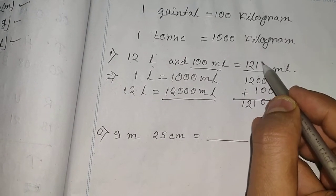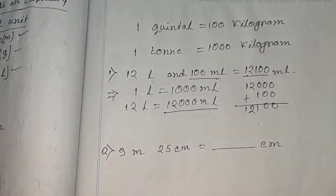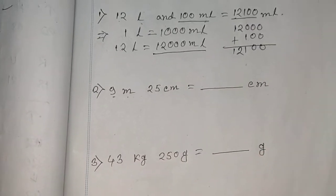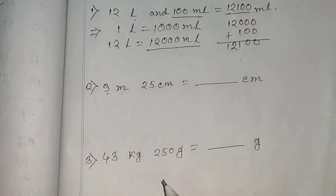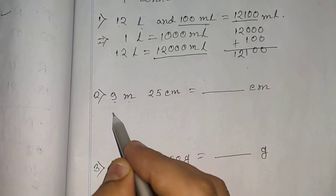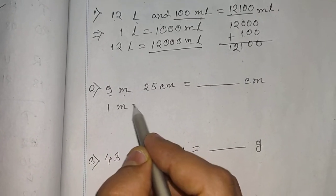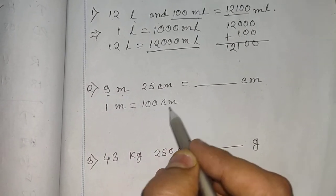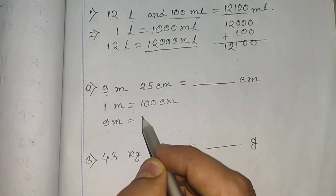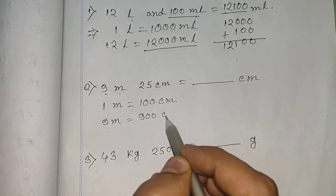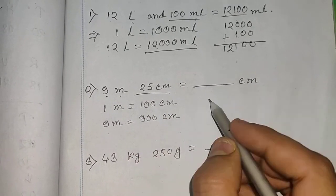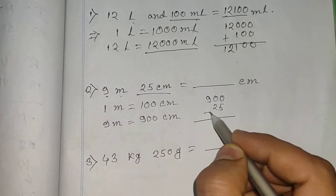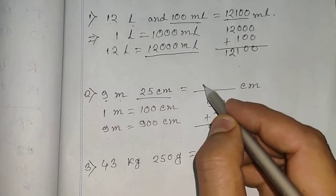Now convert 9 meters 25 centimeters to centimeters. We know 1 meter equals 100 centimeters, so 9 meters equals 900 centimeters. Adding 25 cm, the answer is 925 centimeters.